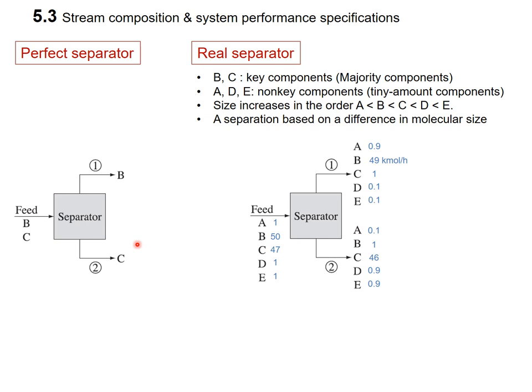So, 100% purity B is obtained from stream 1, and 100% purity of C from stream 2. How can we obtain 100% purity of something? This is our dream, so we should think about the reality.